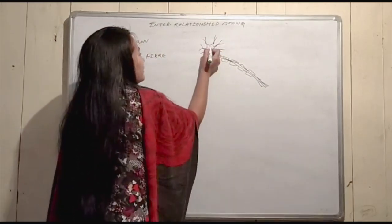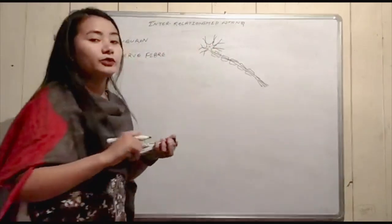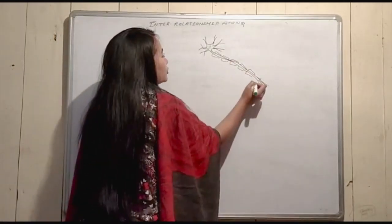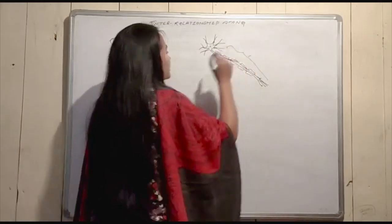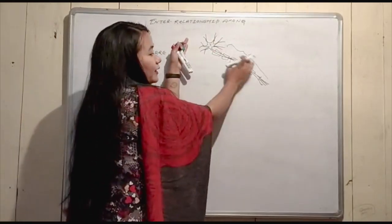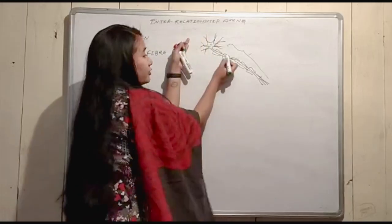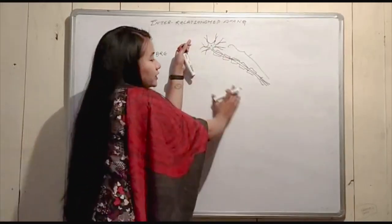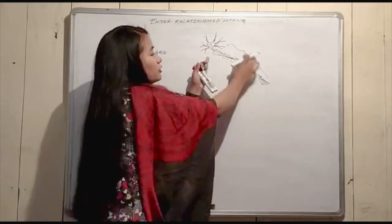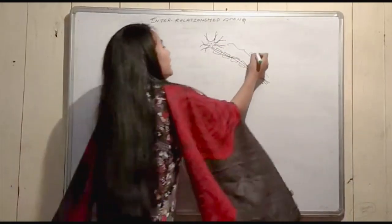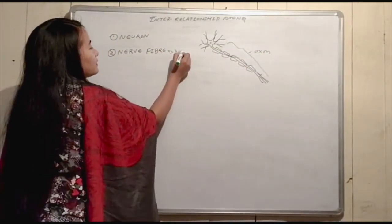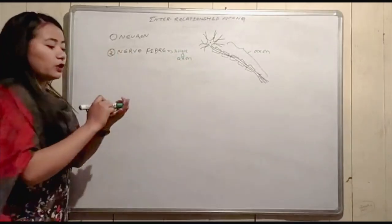A single neuron has a cell body with a nucleus, cytoplasm, and cell organelles. The axon portion of the neuron, when covered with a myelin sheath, is called a nerve fiber. So the axon of a single neuron, along with its myelin sheath covering, forms a single nerve fiber.